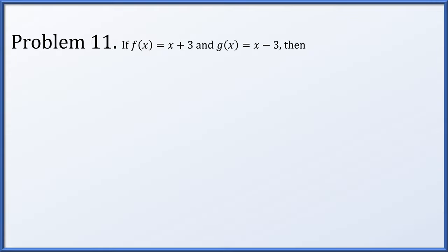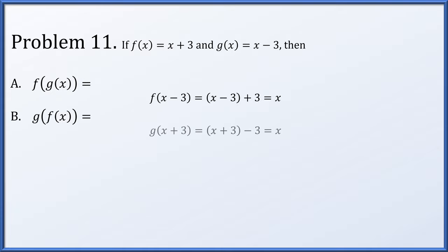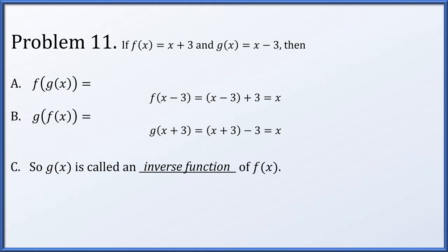Problem 11: f(x) = x + 3 and g(x) = x - 3. For f(g(x)): plug in x - 3 to f, which adds 3 — the +3 and -3 cancel, giving x. For g(f(x)): plug in x + 3 to g, which subtracts 3 — again they cancel, giving x. So g is called an inverse function of f. This is the definition: two functions are inverses when the composition in either order produces the identity function x.